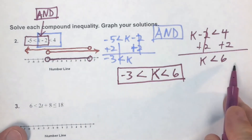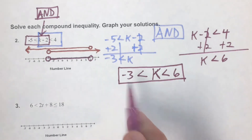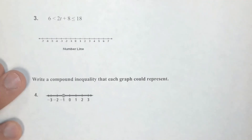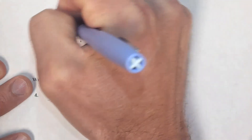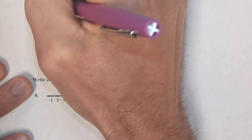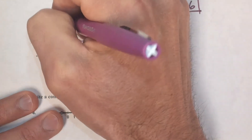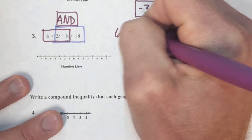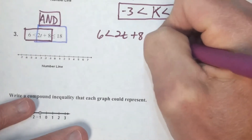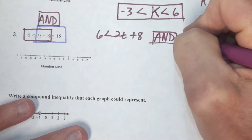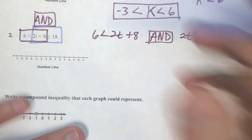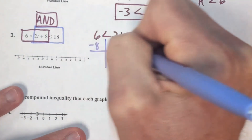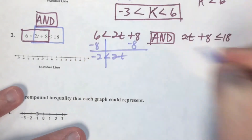Problem 3: again the structure indicates an AND statement. Break into two problems. Rewrite as: six less than two t plus eight, and two t plus eight less than or equal to eighteen.